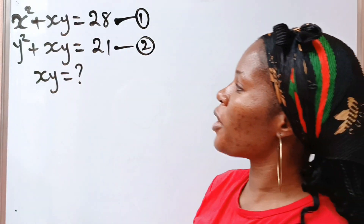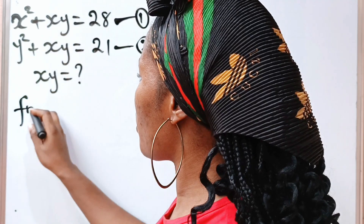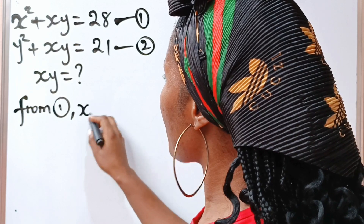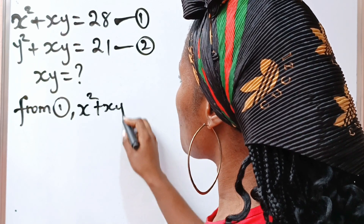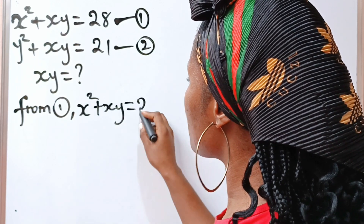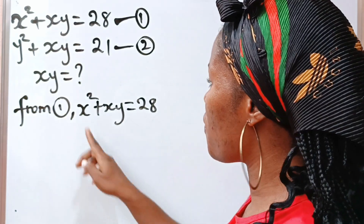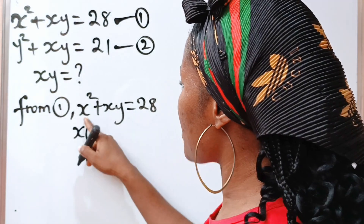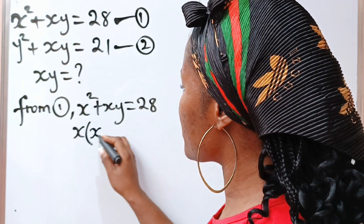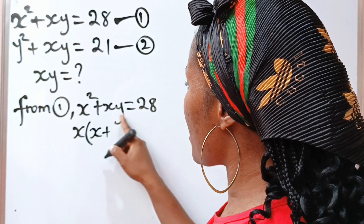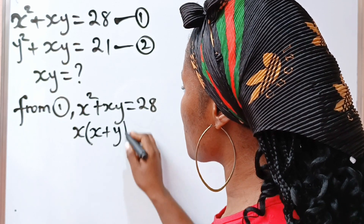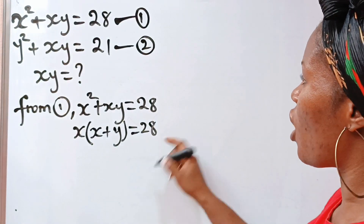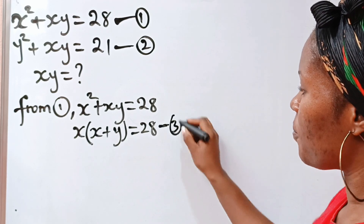From equation 1, we can see that x squared plus xy is equal to 28. Now, if we factorize x from here — if we say x bracket, x squared divided by x gives us x, and xy divided by x gives us y — that is equal to 28. And let's call this equation 3.